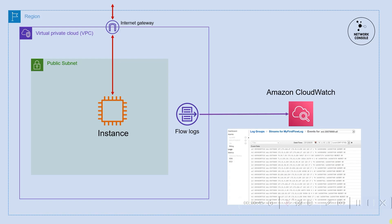There we can see the traffic flow — from which IP address it tried to reach this instance, and what is the action of the network security group, like either it is accepted or rejected. We can see a few more details in that, which I will explain in this lecture.